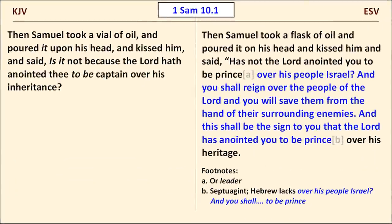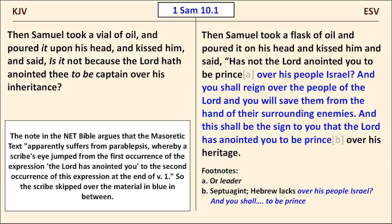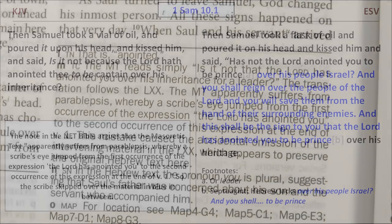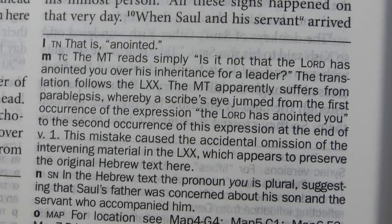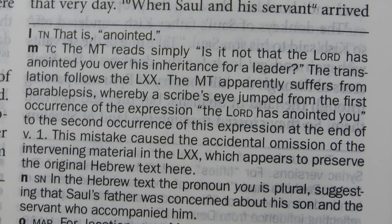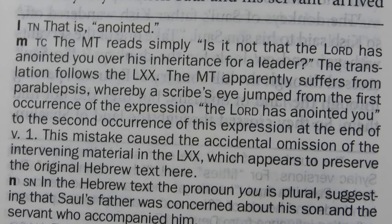Here's a lengthy example from 1 Samuel 10:1. The ESV follows the Septuagint in supplying additional material for Samuel's speech given at Saul's anointing. If you look carefully at the ESV text, you'll see that the words "anointed you to be prince" appear twice — both just before the material in blue and at the end of it. It seems probable that a scribe skipped over the intervening material because of this repetition, and the editors of the NET Bible think so too.